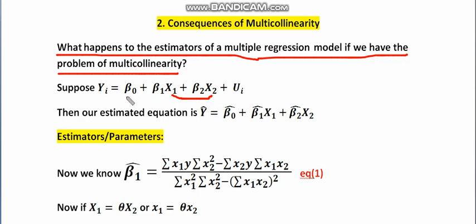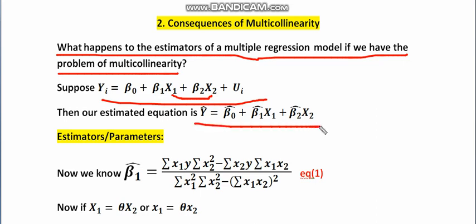To begin with, suppose we have a multiple regression model with just three variables — two independent variables and one dependent variable. If we estimate the equation where y equals beta naught plus beta 1 x1 plus beta 2 x2 plus ui, we write the estimated form as y-hat equals beta naught hat plus beta 1 hat times x1 plus beta 2 hat times x2.